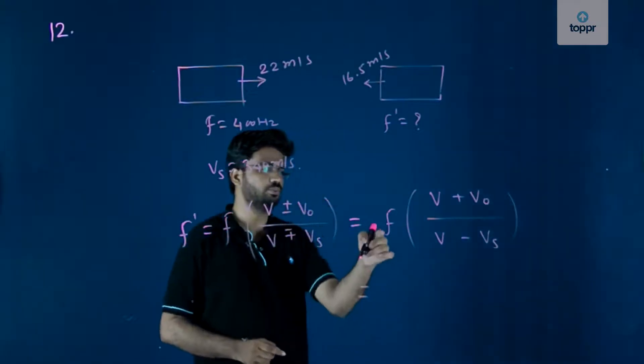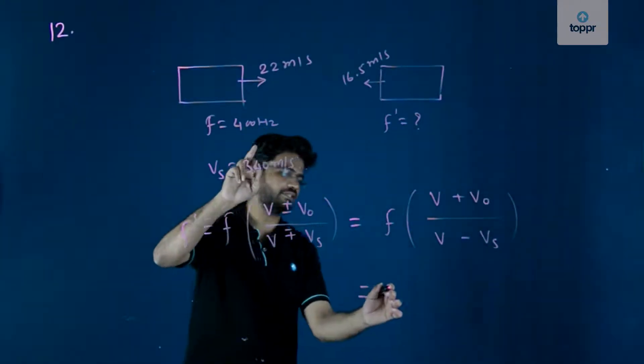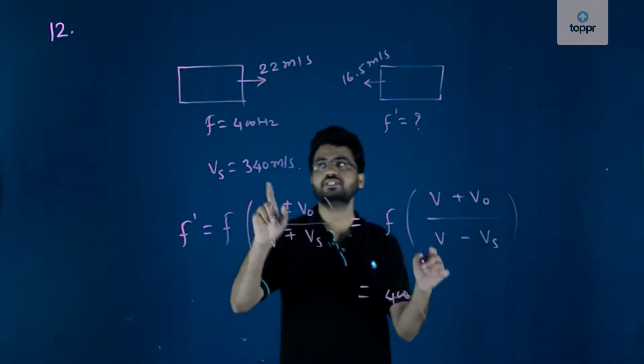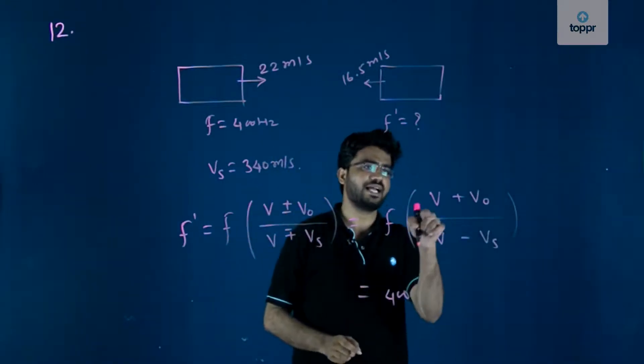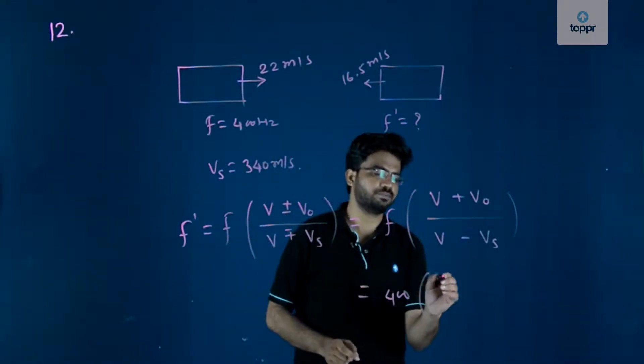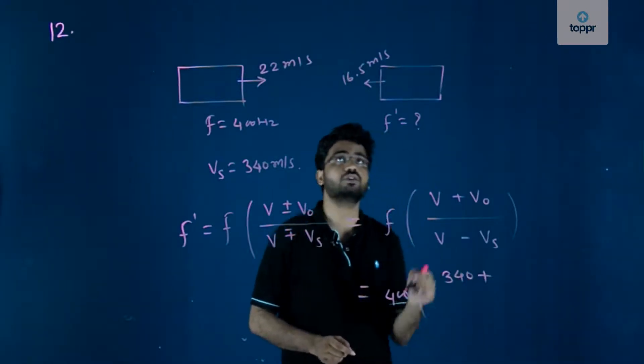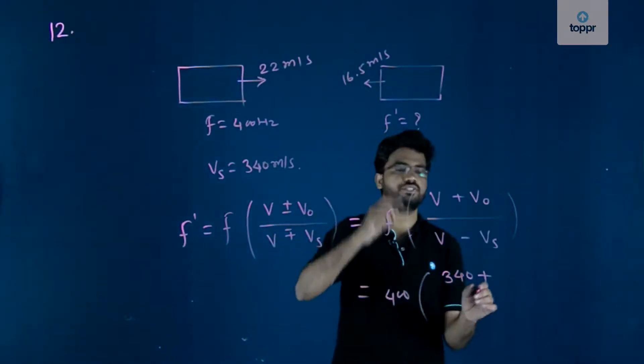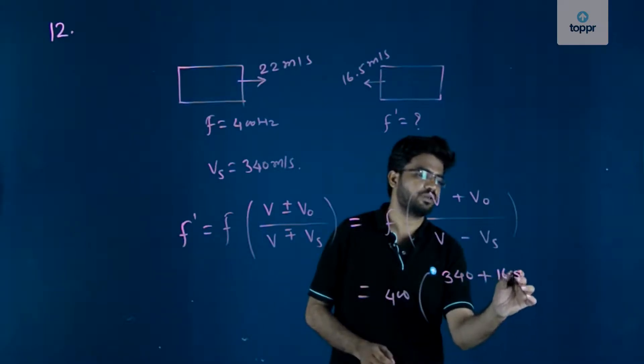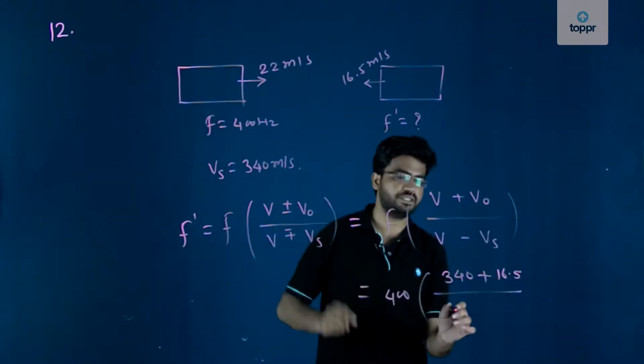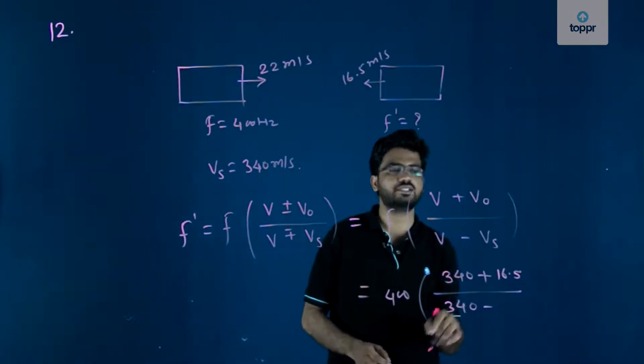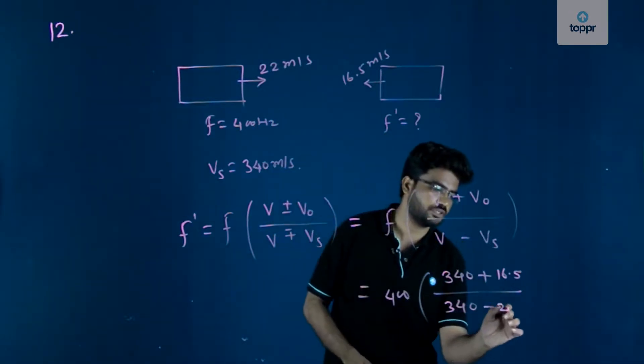So, which is equal to the original frequency is 400 in bracket v, given as velocity of sound 340, plus velocity of observer is 16.5, divided by v of sound is 340 minus velocity of source is 22.